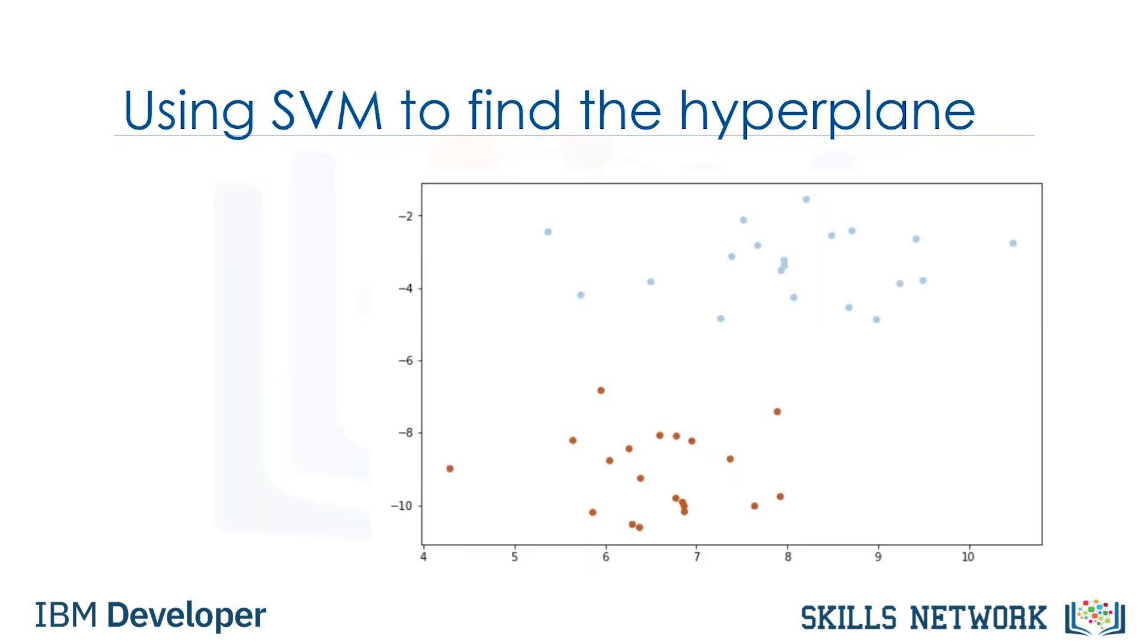Now we get to another question. Specifically, how do we find the right or optimized separator after transformation? Basically, SVMs are based on the idea of finding a hyperplane that best divides a data set into two classes, as shown here.